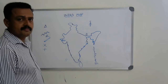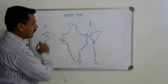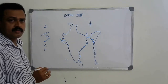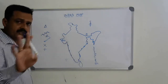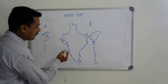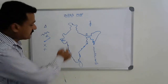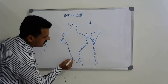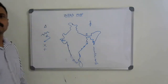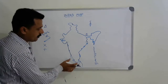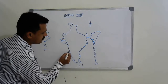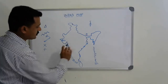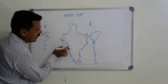Wherever you locate a place, write the name right there. In the question paper they give A, B, C, D — don't write just A, B, C, D on the map; write the actual name there only. The western coastal region is divided into: Malabar coast in Kerala, Kanara coast in Karnataka, Konkan coast in Goa and Maharashtra, and Gujarat coast in Gujarat.